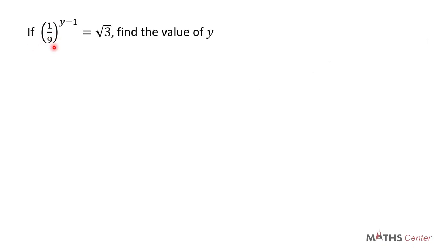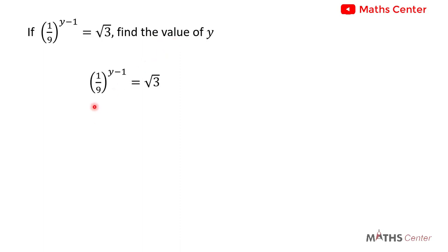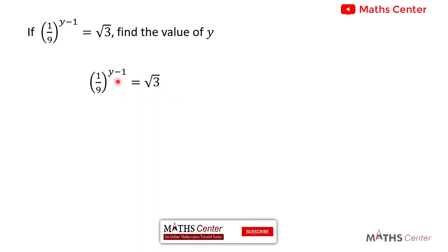If 1 divided by 9 exponent y minus 1 is equal to square root of 3, find the value of y. This is an exponential equation. When you have an exponential equation of this nature, the goal is to make sure that the term on the left hand side and the term on the right hand side have the same base so that you can equate the exponents. So let's do that.